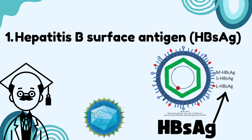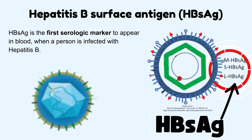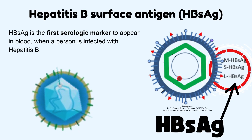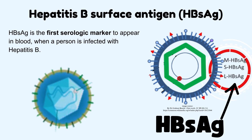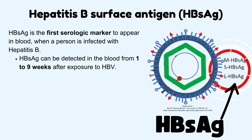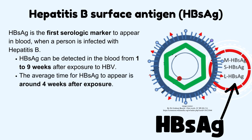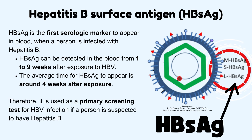Number 1: Hepatitis B surface antigen, HBsAg. HBsAg is the first serologic marker to appear in blood when a person is infected with hepatitis B virus. It can be detected in the blood from one to nine weeks after exposure, with an average appearance around four weeks after exposure. It is used as a primary screening test for hepatitis B infection.